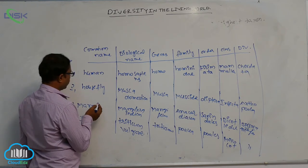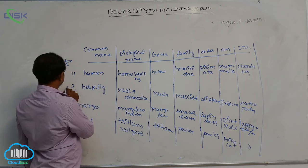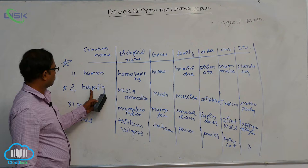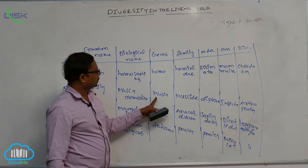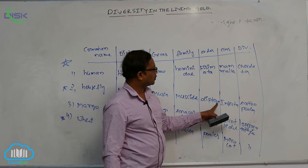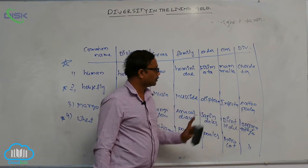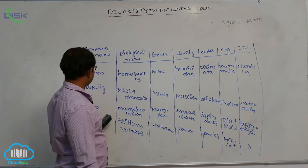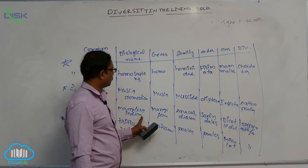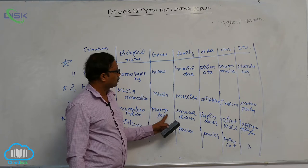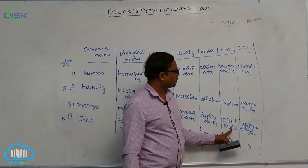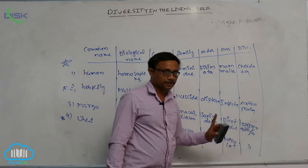Housefly: Musca domestica, genus Musca, family Muscidae, order Diptera, class Insecta, division Arthropoda. Mango: Mangifera indica, genus Mangifera, family Anacardiaceae, order Sapindales, class Dicotyledons, division Spermatophyta. Wheat: Triticum vulgare, genus Triticum, family Poaceae, order Poales, class Monocot, division Spermatophyta.